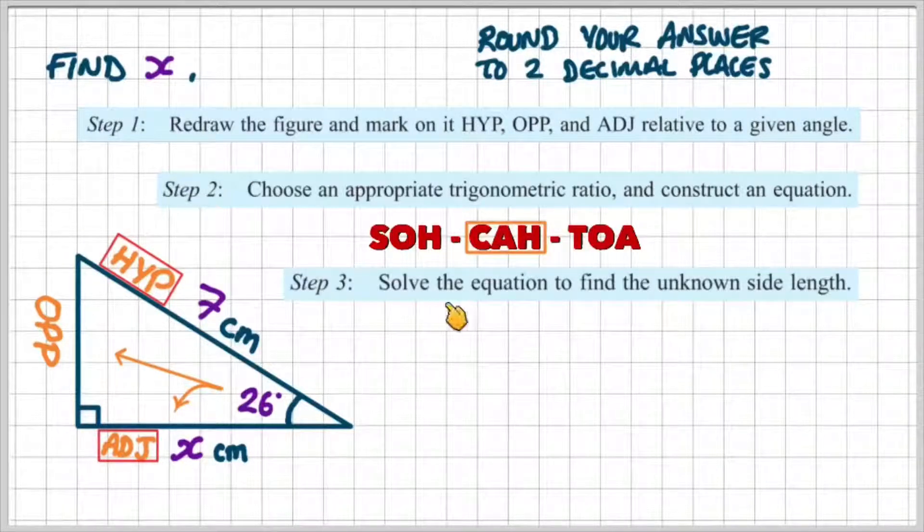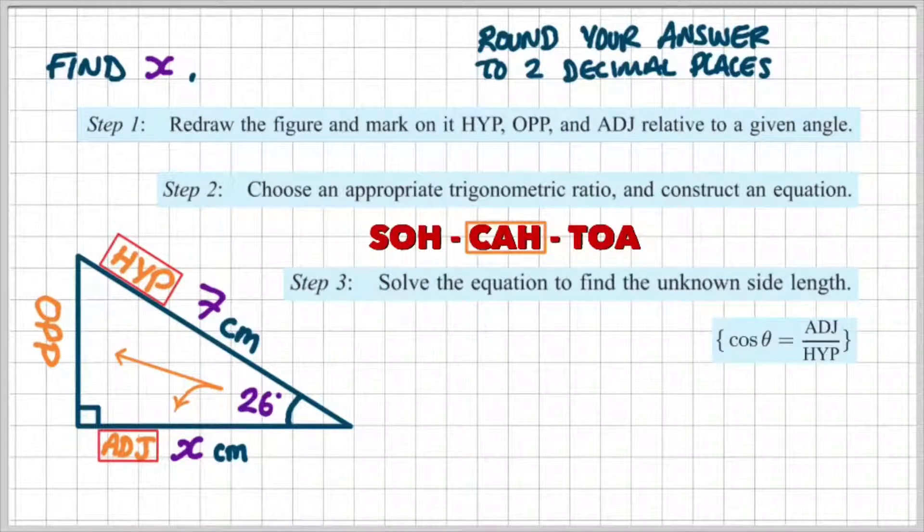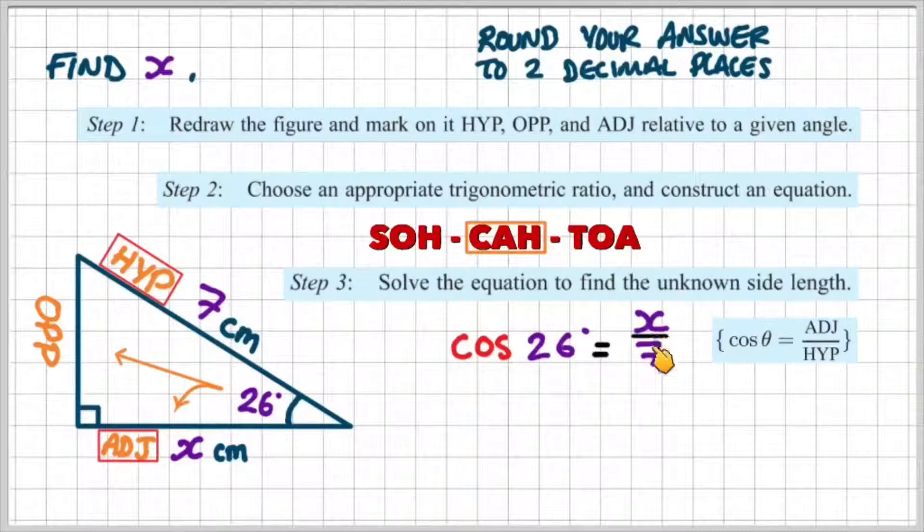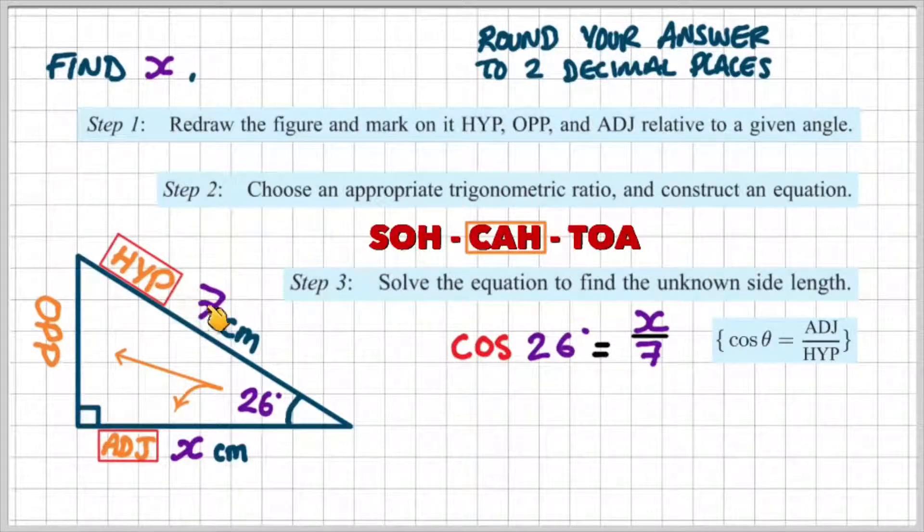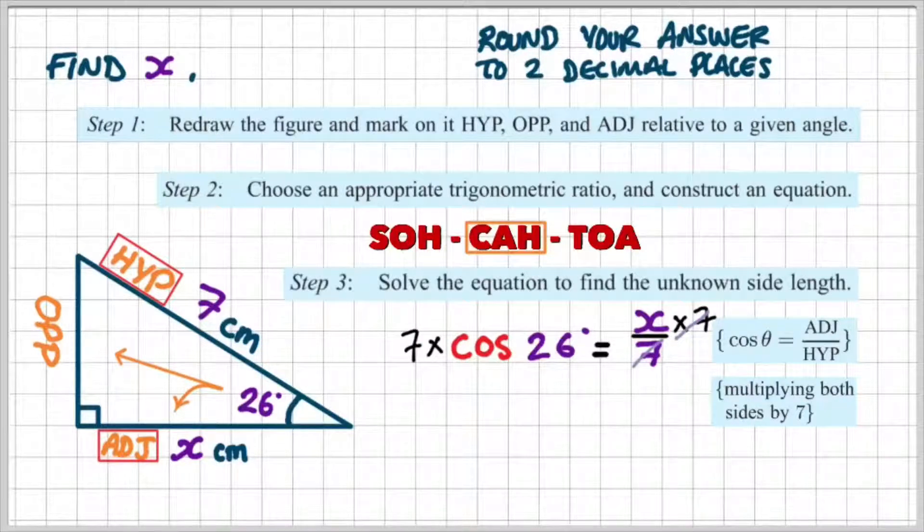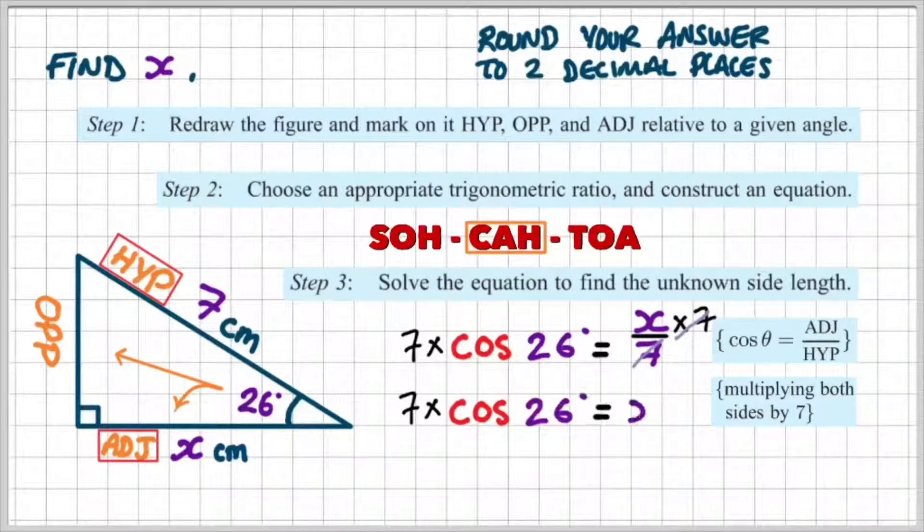Step three, we're going to solve the equation to find the unknown side length. Cosine theta equals adjacent over the hypotenuse. So we can write cosine 26 equals the adjacent over the hypotenuse. The adjacent is X and our hypotenuse is 7. If I multiply both sides by 7, I can cancel out the 7 on the right hand side, which gives me 7 times cosine 26 equals X.